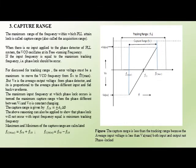In this slide, the third PLL performance factor is the capture range. The maximum range of frequency within which the PLL attains lock is called the capture range, also called the acquisition range. When there is no input applied to the phase detector of the PLL system, the VCO oscillates at its free-running frequency.